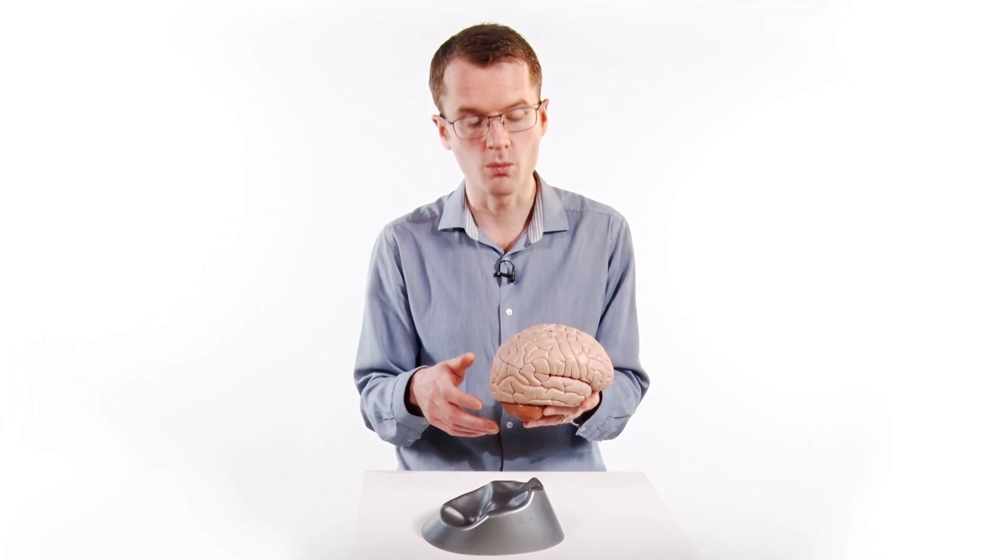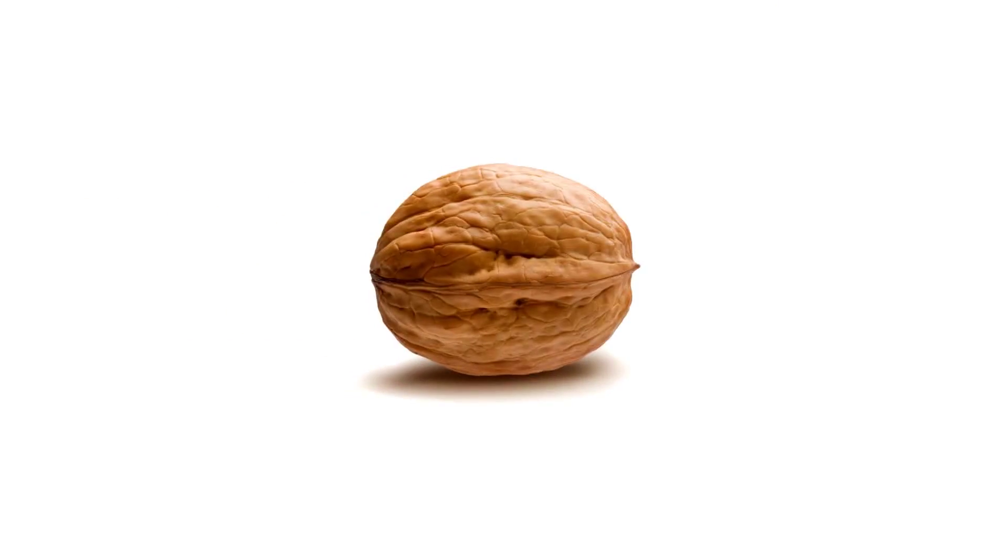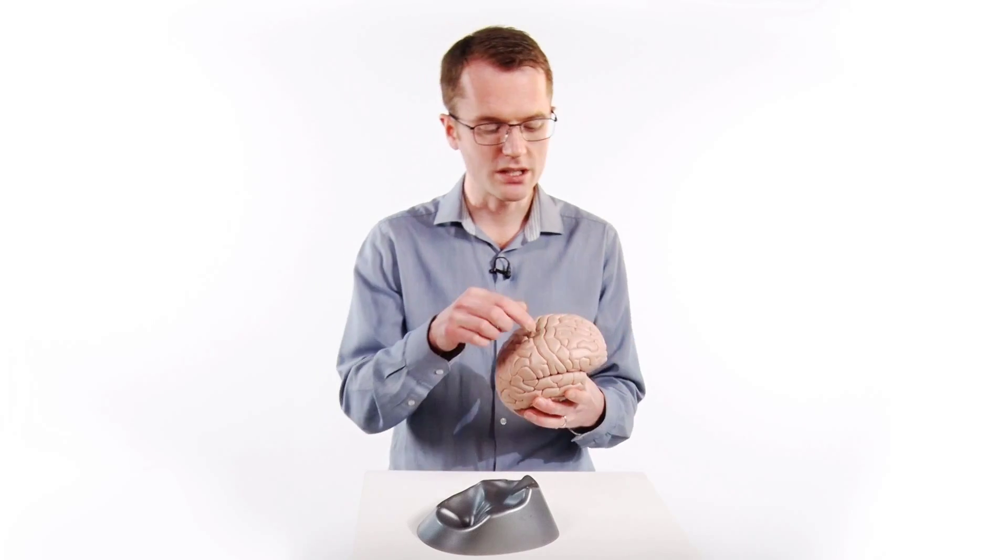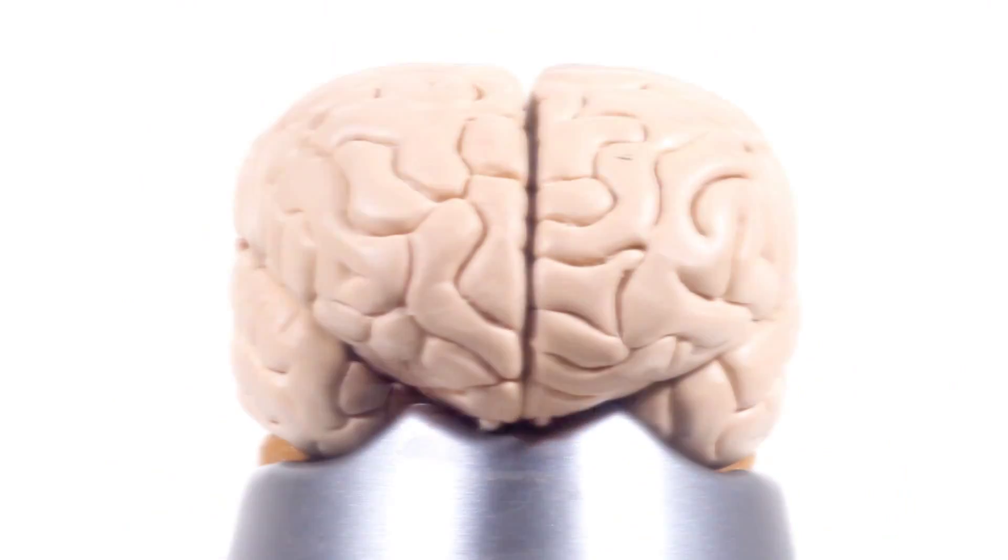So why don't we have a little look at the brain, see if we can work out what the different bits of the brain are for. We can look at the brain, and see it's all folded up. It looks a bit like a shriveled walnut. And all these folds are different bits of the brain, which have different functions.